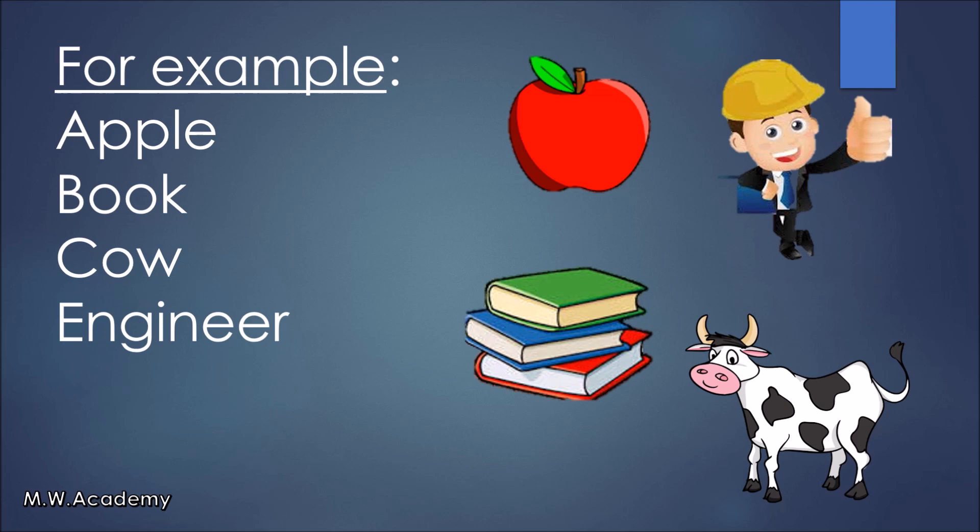Cow. We can see cow. We can hear cow. We can touch cow. We can taste cow. So, cow is concrete noun. Engineer. We can see engineer. We can hear engineer. We can touch engineer. Engineer is concrete noun.